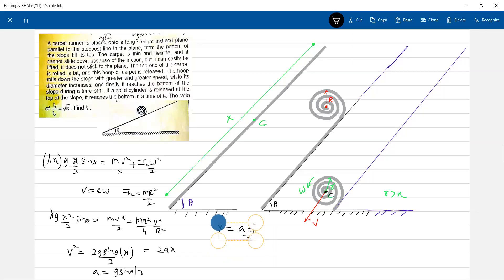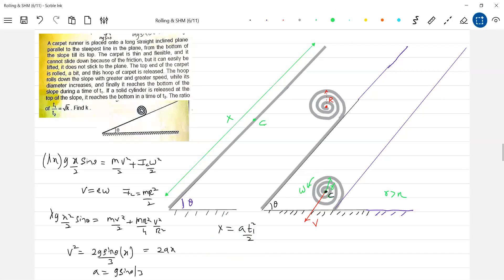What is this? Anybody? x equal to t1 square by 2, something I wrote, equations of motion. The distance, finally what happened, this end of the carpet will reach here, no? Rough diagram I put it. So what is t1? Square root of 2x by a. What is a? a will be.